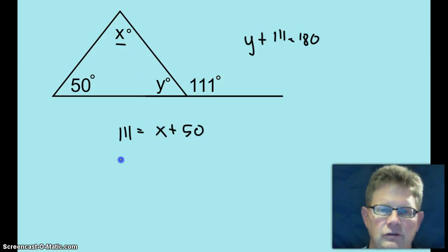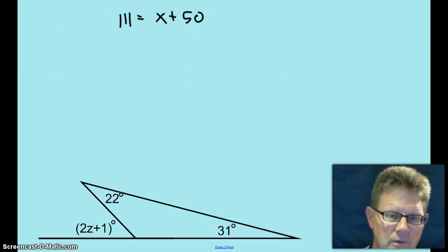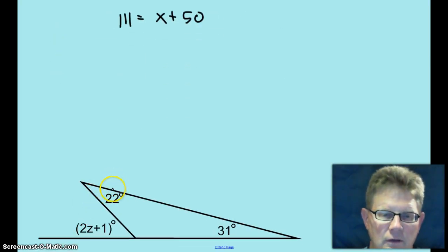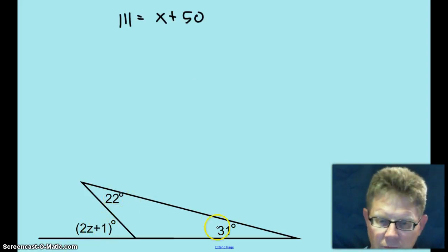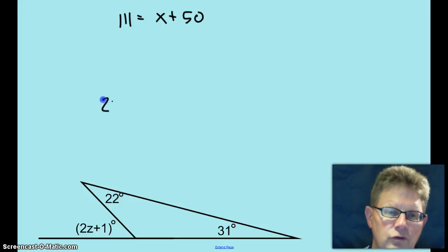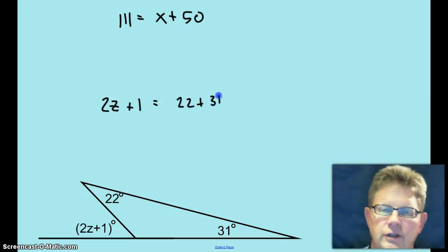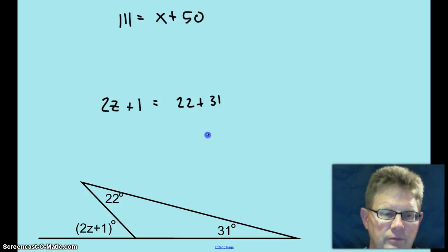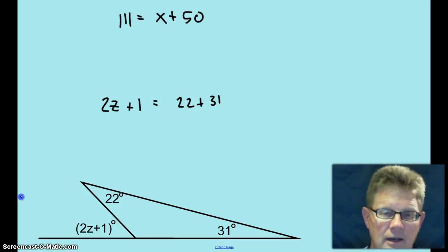Let's try another one. Here's the exterior angle: 2z plus 1. Here are the two remote interiors. So 2z plus 1 equals the sum of the two remote interiors. There's your equation — go ahead and solve it.